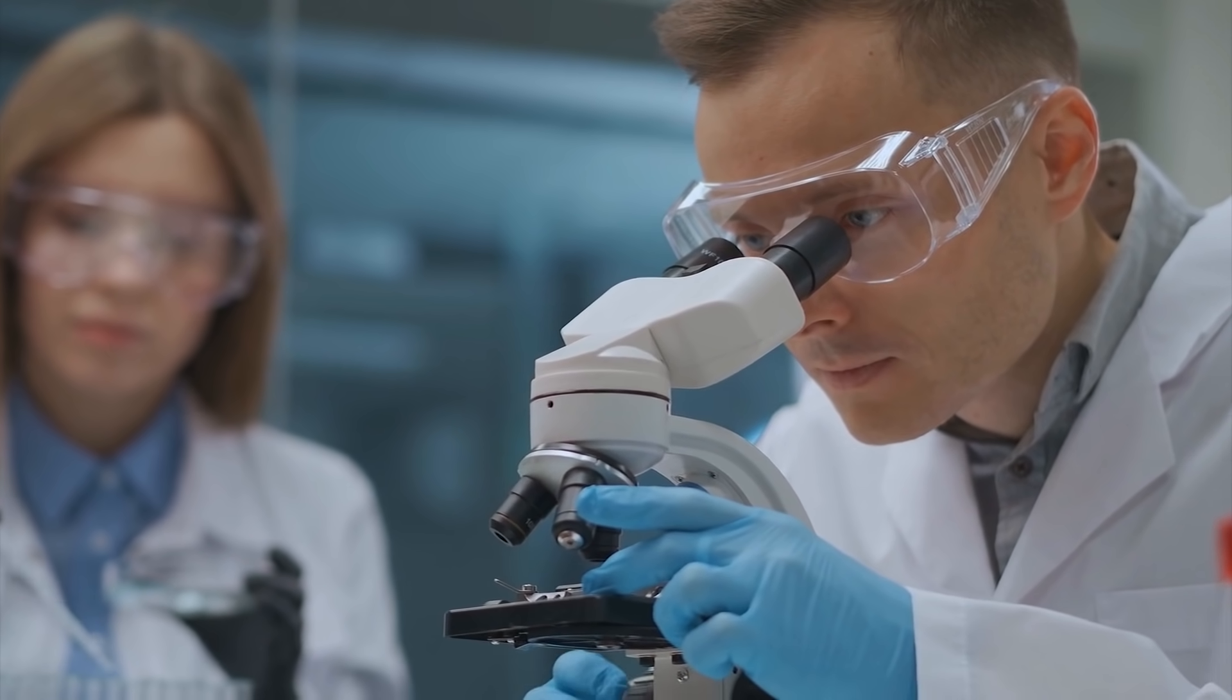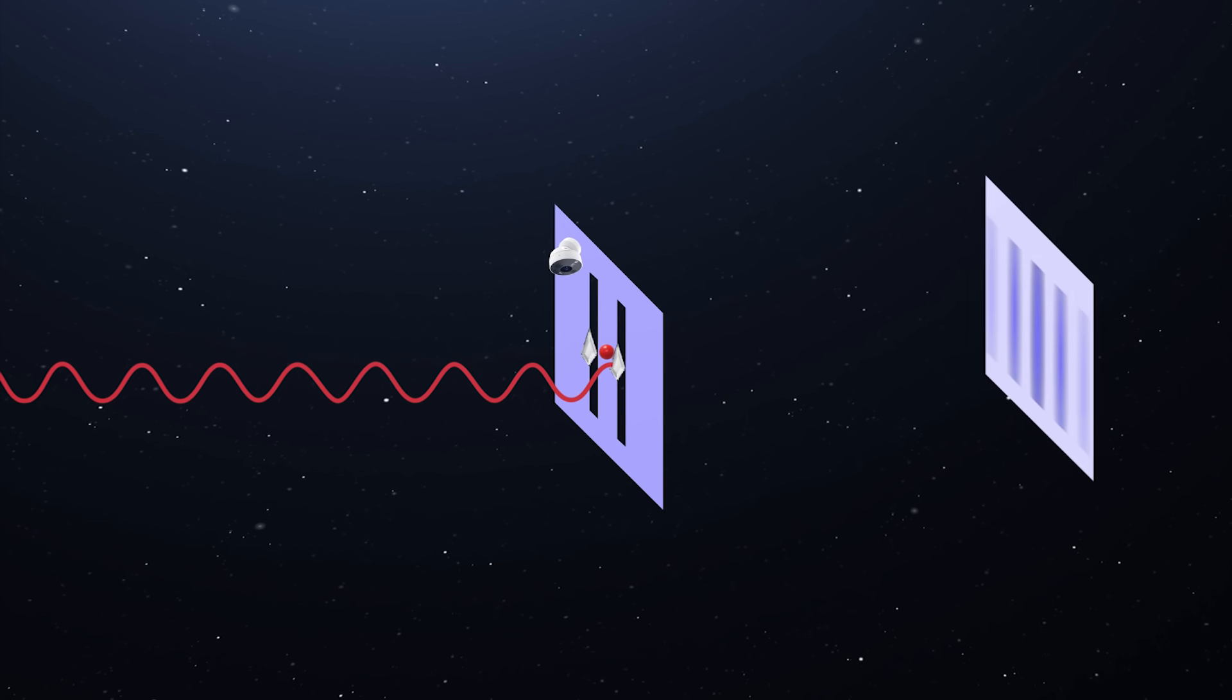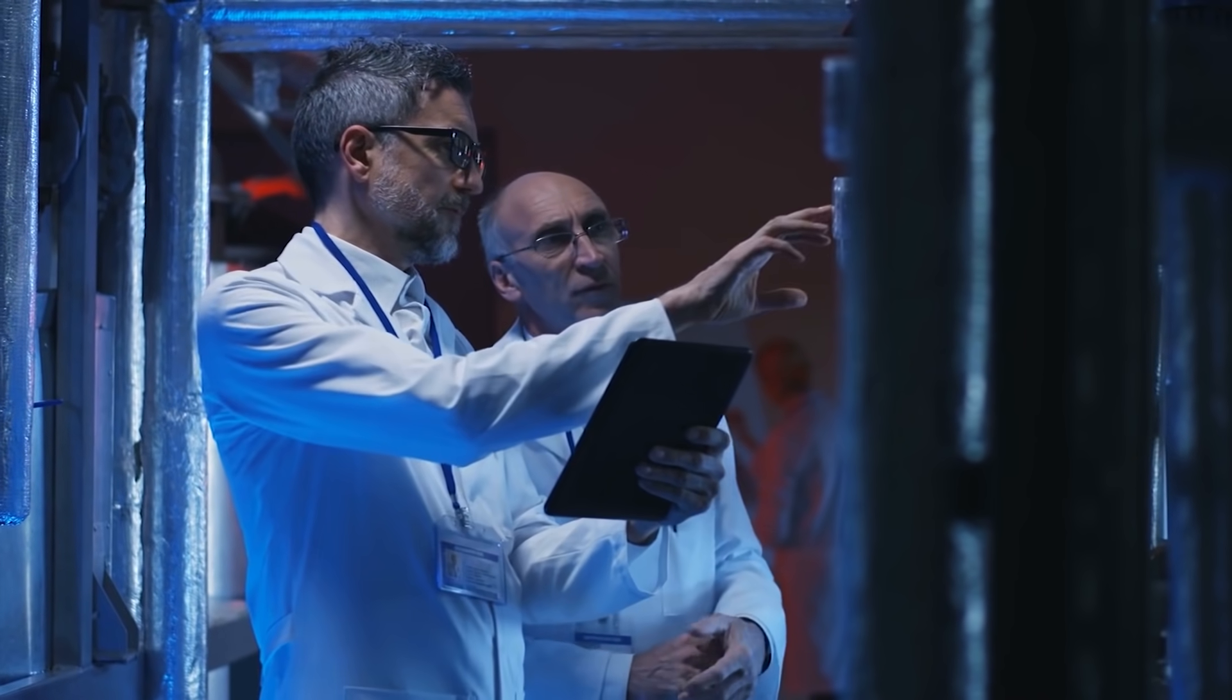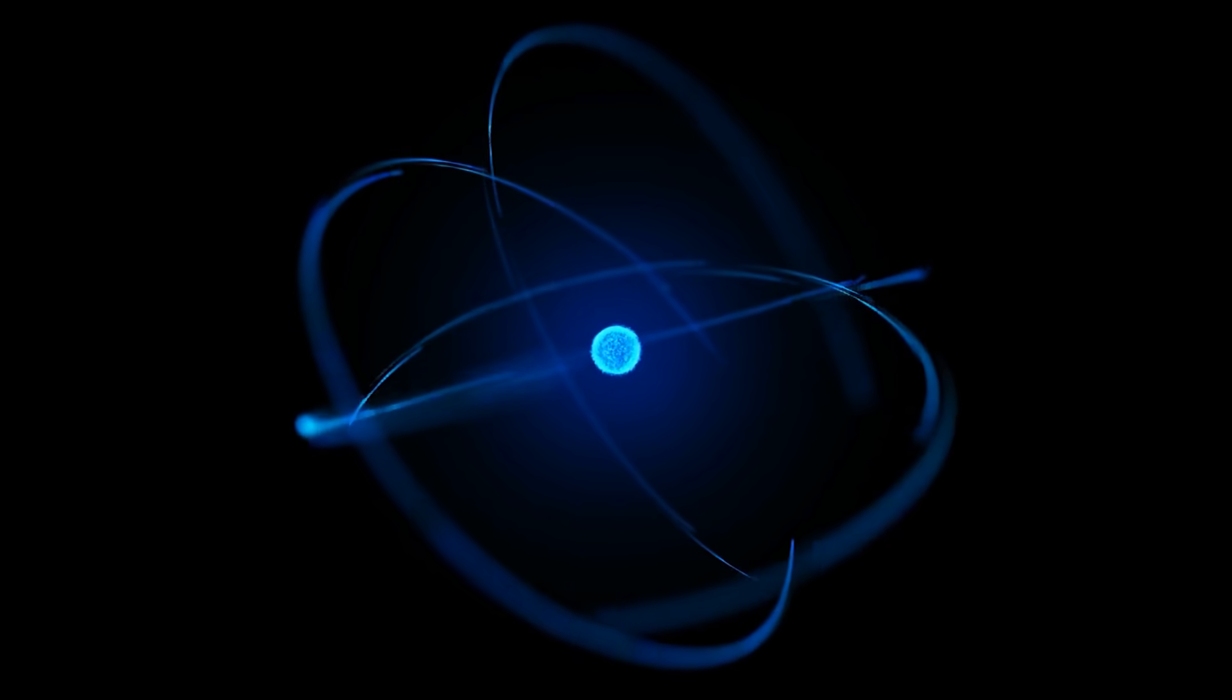So the scientists tried a variation on the double slit experiment and placed a special crystal at each slit that would split any incoming photon into an identical pair. One photon should create the standard interference pattern while the other would travel to the detector. But the strangest thing is that it still didn't work. This means that observing a photon can change events that have already happened. This is still one of the greatest mysteries of quantum mechanics.